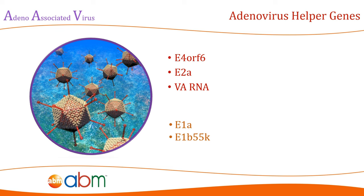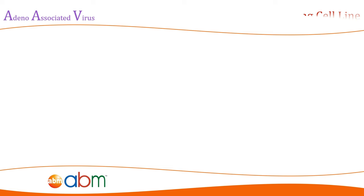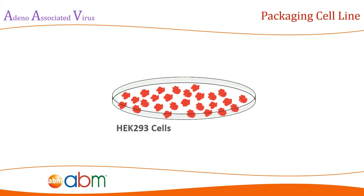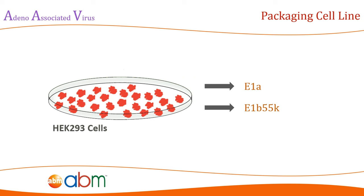The E4ORF6, E2A, and VA RNA genes are provided on a separate plasmid that is transfected with other recombinant AAV components, while the E1A and E1B55K are generally expressed by the packaging cell line itself. The most commonly used cell line in recombinant AAV generation is the HEK293 cells, which express the adenovirus helper genes E1A and E1B55K. Introducing the other adenoviral helper genes in plasmid form into the HEK293 cells ensures that expression of the transgene-harboring recombinant AAV stays constant throughout the process.